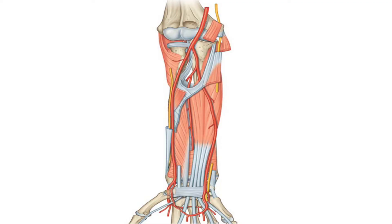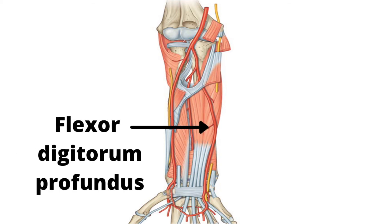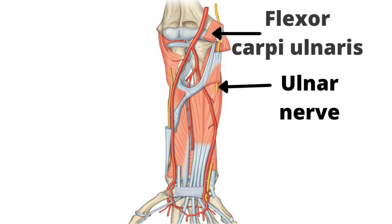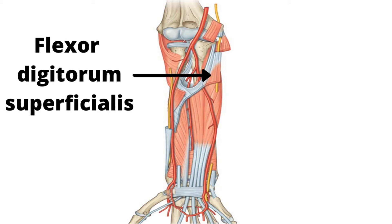Relations: anteriorly in its upper half, the artery is deep and is covered by the muscles arising from the common flexor origin and the median nerve. The lower half is superficial, covered only by skin and fascia. Posteriorly it lies on the brachialis and flexor digitorum profundus muscles. Medially it is related to the ulnar nerve and the flexor carpi ulnaris muscle. Laterally it is related to the flexor digitorum superficialis. Throughout, the artery is accompanied by its venae comitantes.